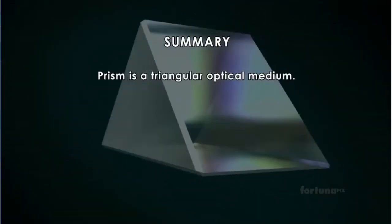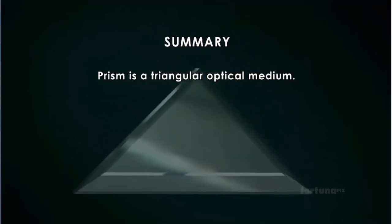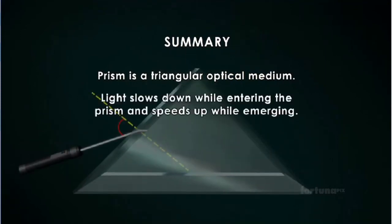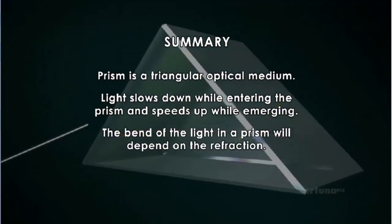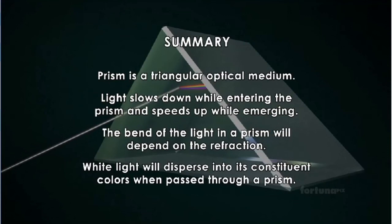Prism is a triangular optical medium. Light slows down while entering the prism and speeds up while emerging. The bend of the light in a prism will depend on the refraction. White light will disperse into its constituent colors when passed through a prism.